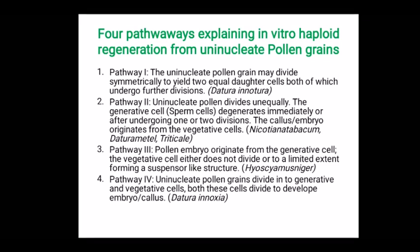In pathway two, the uninucleate pollen divides unequally; the generative cell degenerates immediately, and the callus or embryo originates from the vegetative cells undergoing androgenesis. This is observed in Nicotiana tabacum, Datura metel, and Triticale.